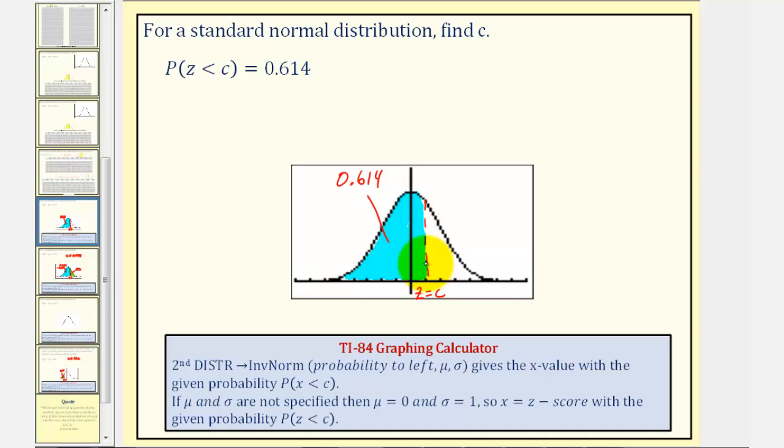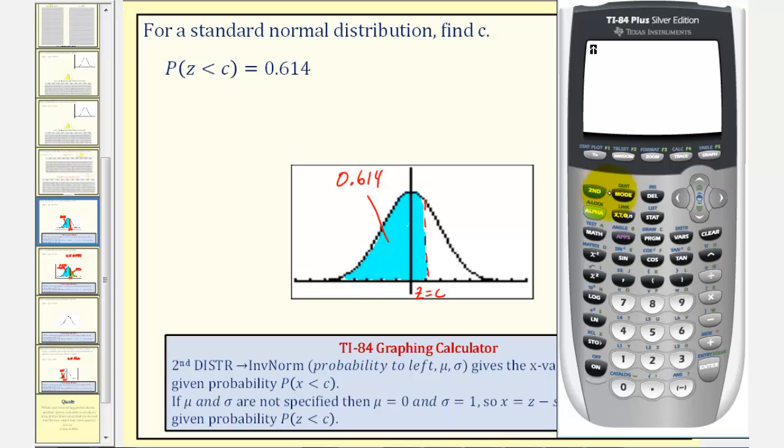Which means to find this Z-score, or the value of C, we'll first press second VARS for the distribution menu, then we'll select option three for inverse norm, and now we'll just enter the area, or probability to the left, which we know is 0.614. Close parenthesis and enter.